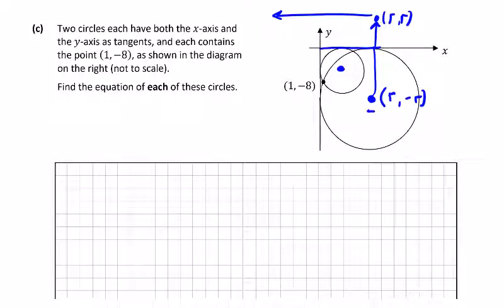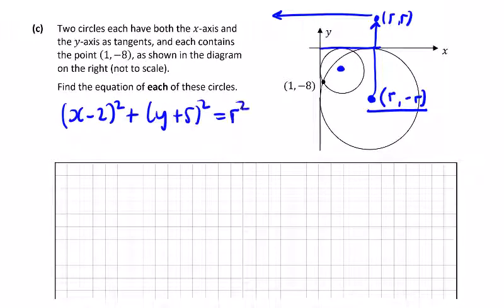So if we have an equation like the last part, x minus 2 squared, I'll just make one up here, plus y plus 5 squared equals r squared, we can fill our information here. We have the point r minus r, and we have r is equal to r. So that's the quick way to do this one.